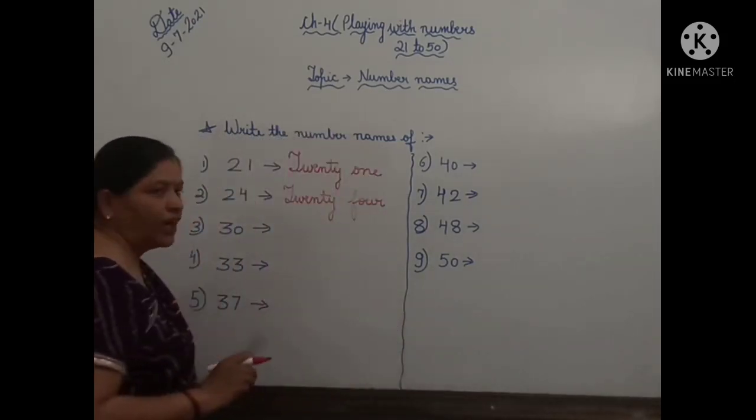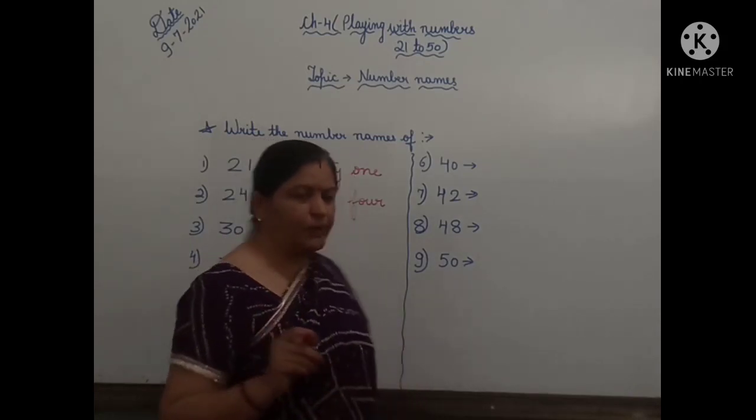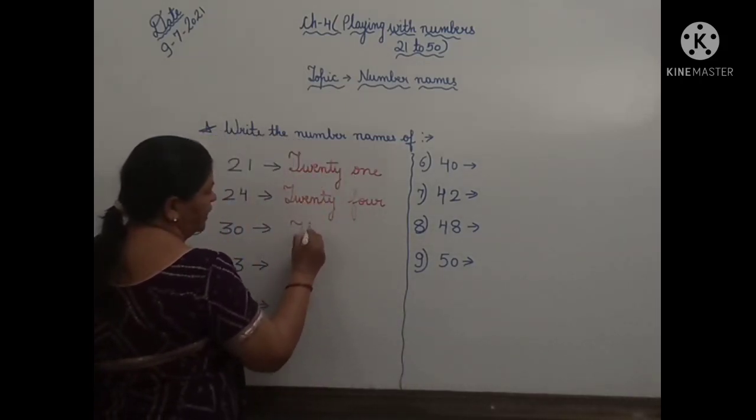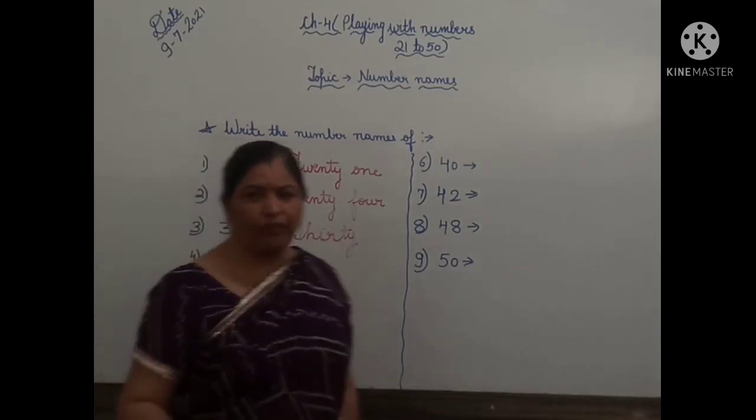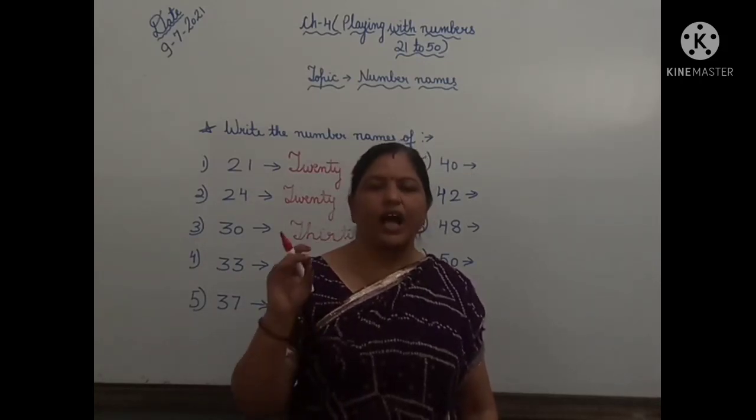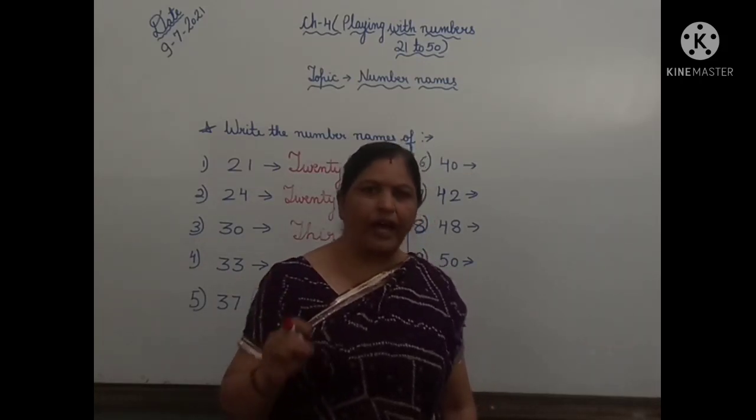Next, 30. Now children, what is the spelling of 30? I am writing it. T-H-I-R-T-Y, 30. What is the spelling of 30? T-H-I-R-T-Y, 30.